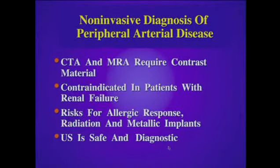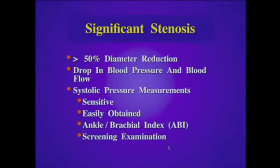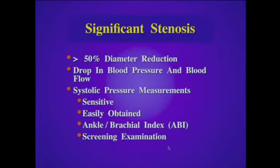Ultrasound has proven to be safe and diagnostic in the evaluation of the peripheral arteries. In vivo and in vitro tests have shown that one can identify a significant stenosis by determining a greater than 50 percent diameter reduction, identified as a drop in blood pressure and blood flow across the lesion. We can detect these stenoses with systolic pressure measurements such as the ankle brachial index, which are easily obtained, very sensitive, and very valuable as a screening examination.